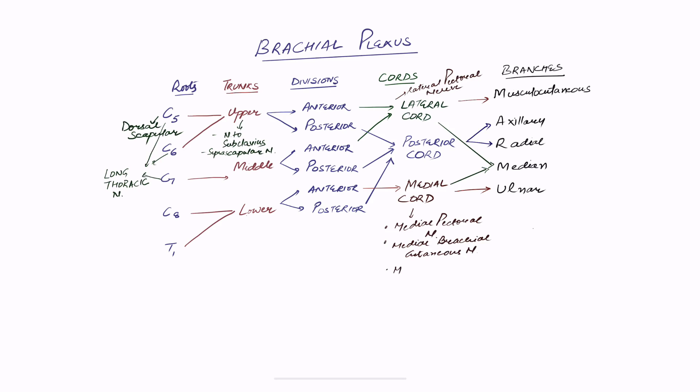To summarize the easy way to remember the brachial plexus: roots, trunks, divisions, cords, and branches. The mnemonic is 'Remember To Drink Cold Beer' — R-T-D-C-B — for Roots, Trunks, Divisions, Cords, and Branches. The other mnemonic is MARMU — musculocutaneous, axillary, radial, median, and ulnar. Keep this picture in mind, pause and review the video if needed. Root C5 to T1 form upper, middle, and lower trunks; each gives two divisions; they form lateral, posterior, and medial cords; giving five main branches and some minor branches.